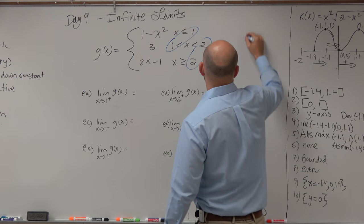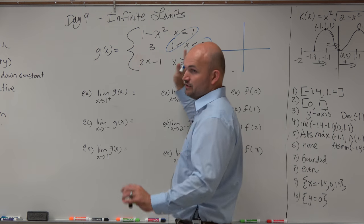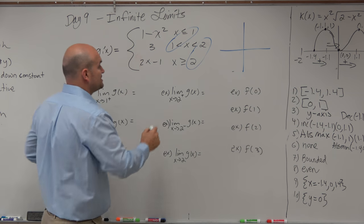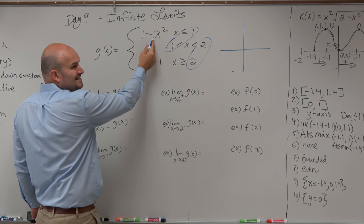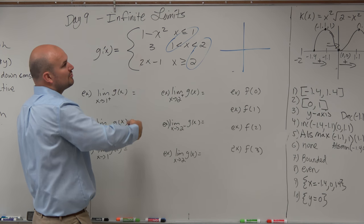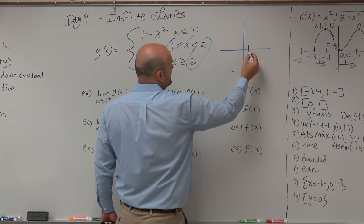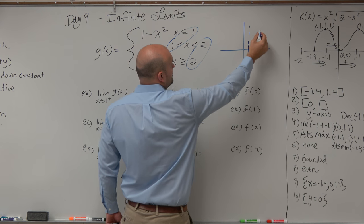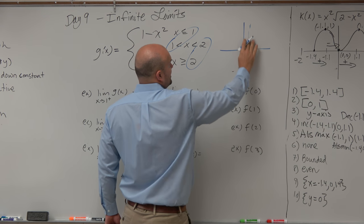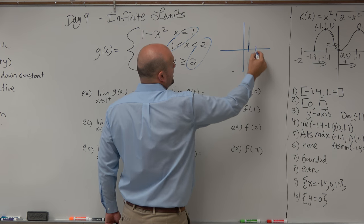And again, if I was just going to sketch this graph, I have no idea if it's continuous or not, and I don't really need to know at this point. All I need to know is 1 minus x squared, so that's going to be an upside down parabola. So that's going to be less than 1. So here's 1, there's one breaking point. And then there's another breaking point. I don't want to make it look like an asymptote. And there's another breaking point at 2.